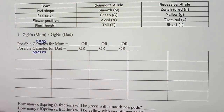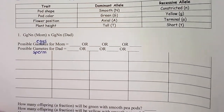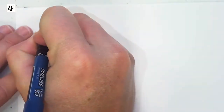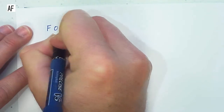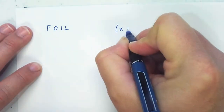Before we do this, I want to show you a little trick. You may have seen this in math class — it's called FOIL. I'll show you this in an example.